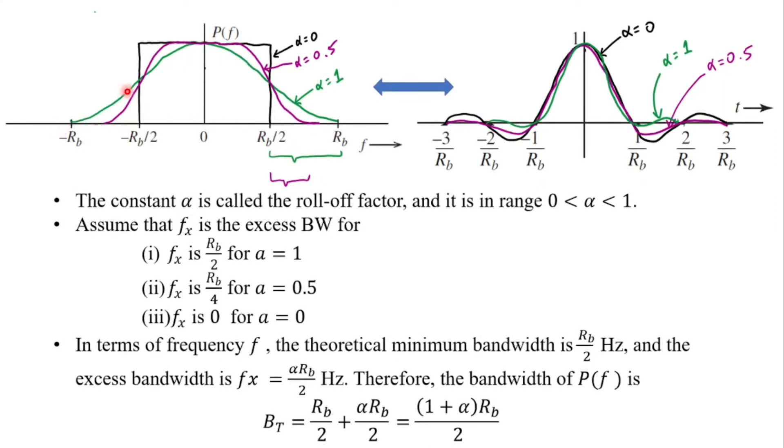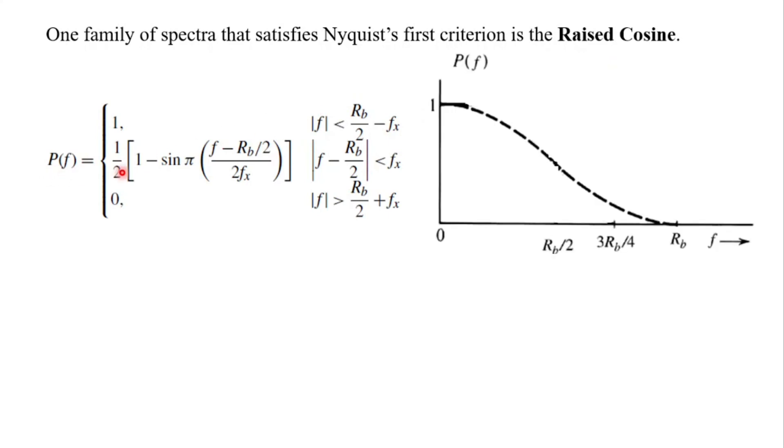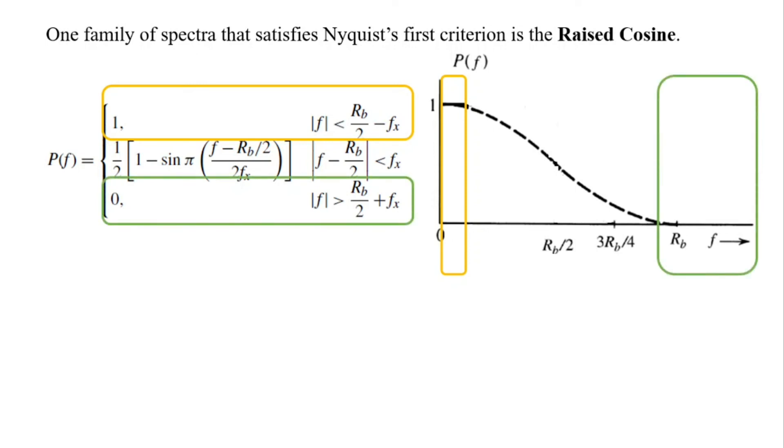But what sort of spectrum is this? Let us try to understand this analytically. A family of spectra that satisfies the Nyquist first criterion is the raised cosine. Herein the spectrum shown on right is just the right-sided of a double-sided spectrum which is symmetric. P of f will have a value of 1 for a certain range of f and it will have a value of 0 for the tail range of f.